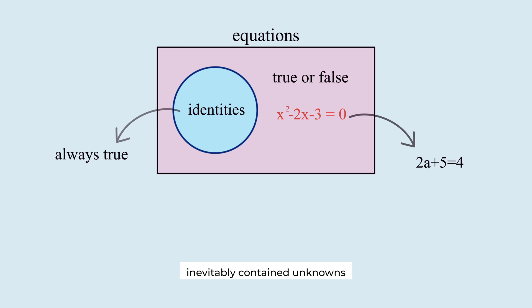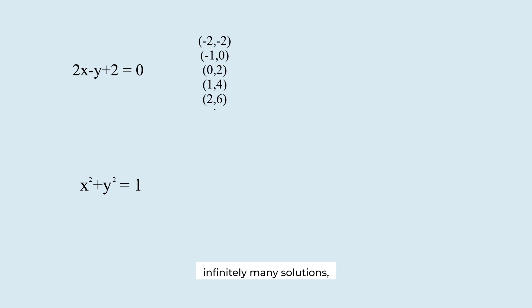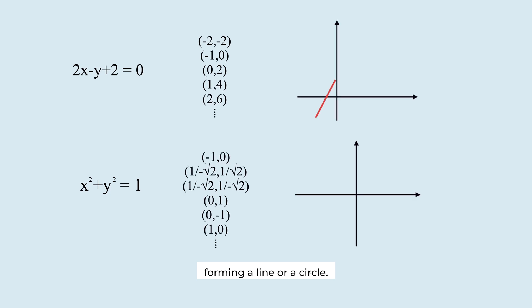Such equations inevitably contain unknowns, represented by variables. These equations have infinitely many solutions, forming a line or a circle. That's why this is called the equation of a line, and this one is the equation of a circle.